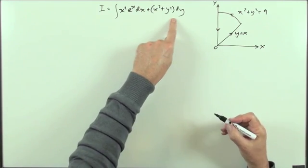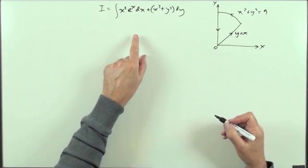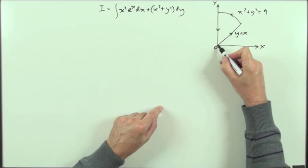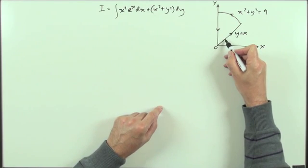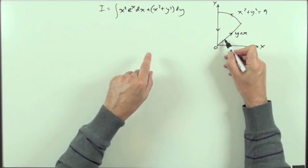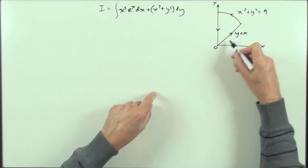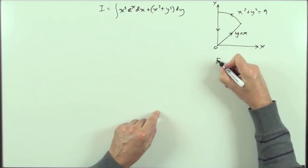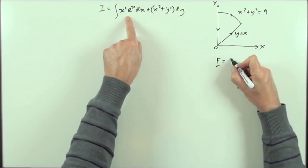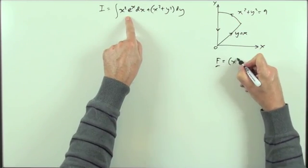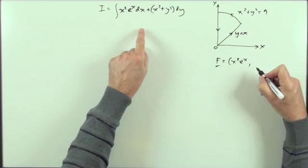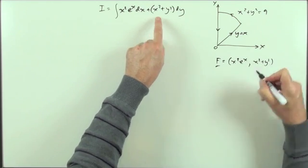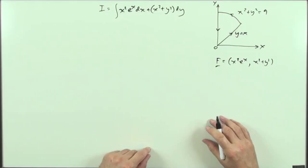And what that represents is the scalar product of the position vector of the point with the vector field you're travelling through, where that vector field has two components: x squared e to the x as its x-component, and x squared plus y squared as its y-component.